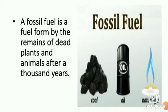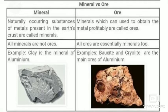What is the difference between minerals and ores? Naturally occurring substances of metals present in the earth's crust are called minerals. Minerals which can be used to obtain metal profitably are called ores. All minerals are not ores, but all ores are essentially minerals.